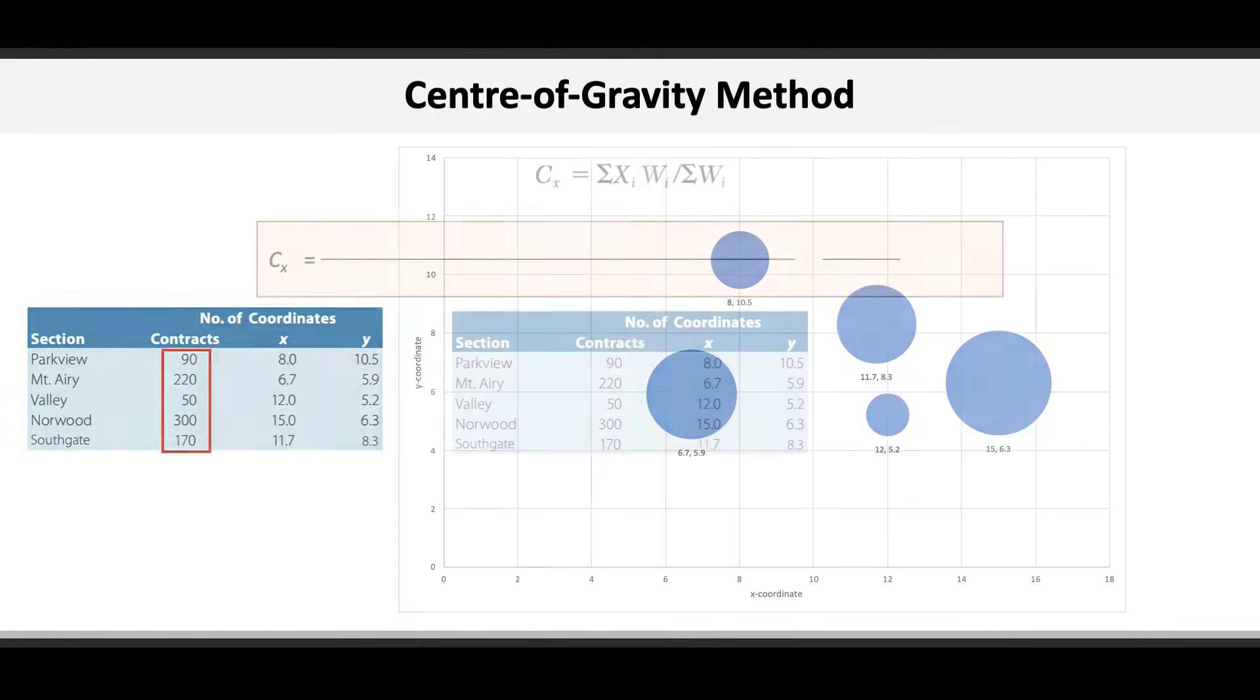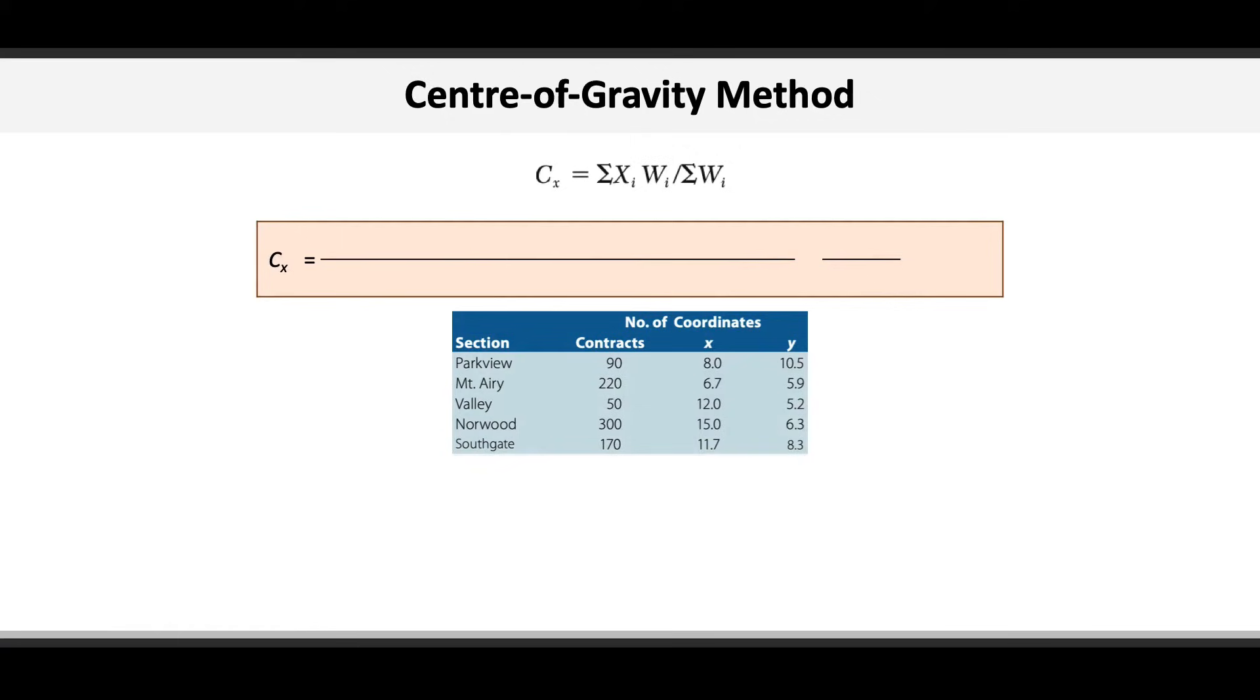So let's proceed with calculating Cx. In the numerator, we take 8 times 90, plus 6.7 times 220, plus 12 times 50, plus 15 times 300, plus 11.7 times 170. Now see from the data that the numbers in front of the brackets correspond to the x coordinates for each customer, so 8, 6.7, etc. The number in the brackets is just the number of contracts, so 90, 220, 50, etc.